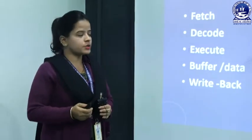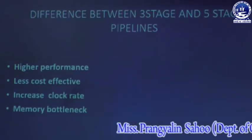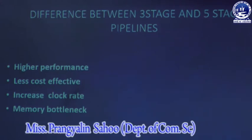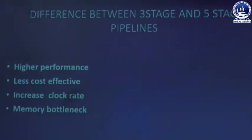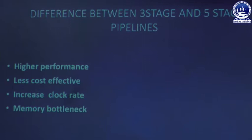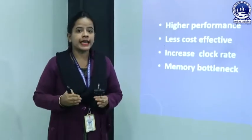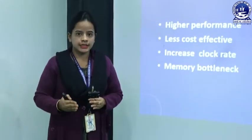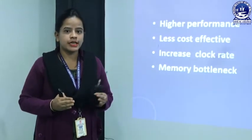Now the next concept: the difference between three-stage and five-stage pipelines. The differences are: higher performance, less cost-effective, increased clock rate, and memory bottleneck. For higher performance: in the case of five-stage pipelining, it provides multi-cycle instruction execution, so the CPU throughput is much greater compared to three-stage pipelining.